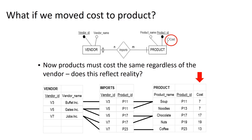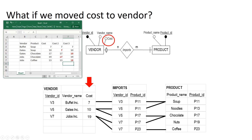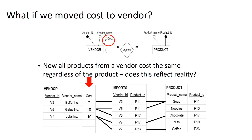So let's now imagine what if cost was an attribute not of the relationship and not of product, but of the vendor. Now we have Buffett Incorporated soup that costs $7. Our Gates Incorporated soup costs $10, and our Gates Incorporated chocolate also costs $10, because price is an attribute of the vendor — nothing to do with the product. Our Jobs Incorporated chocolate costs $19 and our Jobs Incorporated coffee also costs $19. So now we've introduced this issue where vendors have to charge the same amount for their products no matter what the product is, which is probably also not a very realistic way to model this relationship.